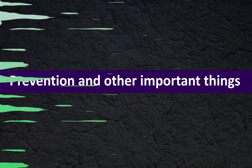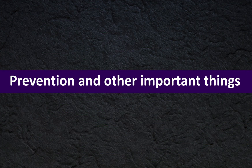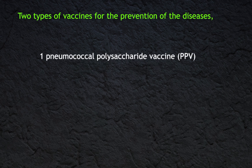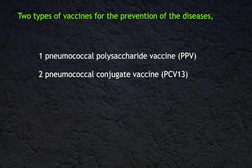Prevention and other important things: There are two types of vaccines for the prevention of diseases caused by this organism — the pneumococcal polysaccharide vaccine (PPV) and the pneumococcal conjugate vaccine PCV13. Friends, I hope you enjoyed this video and gained knowledge about Streptococcus pneumoniae.